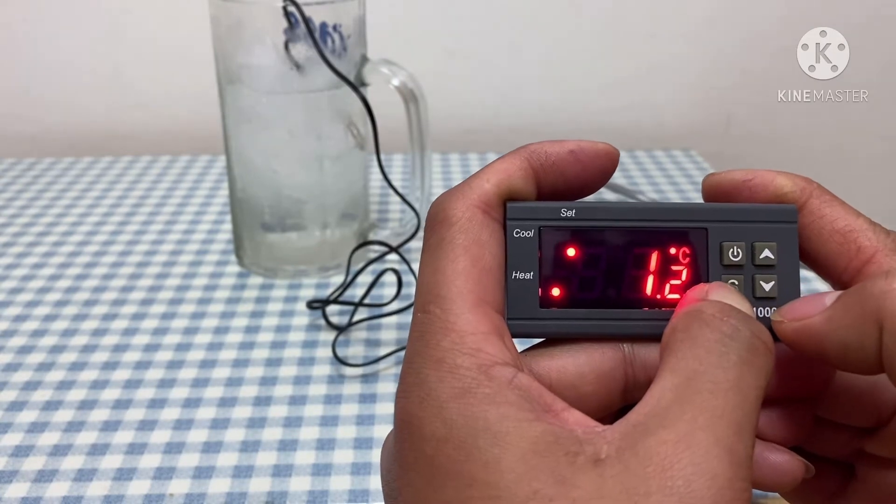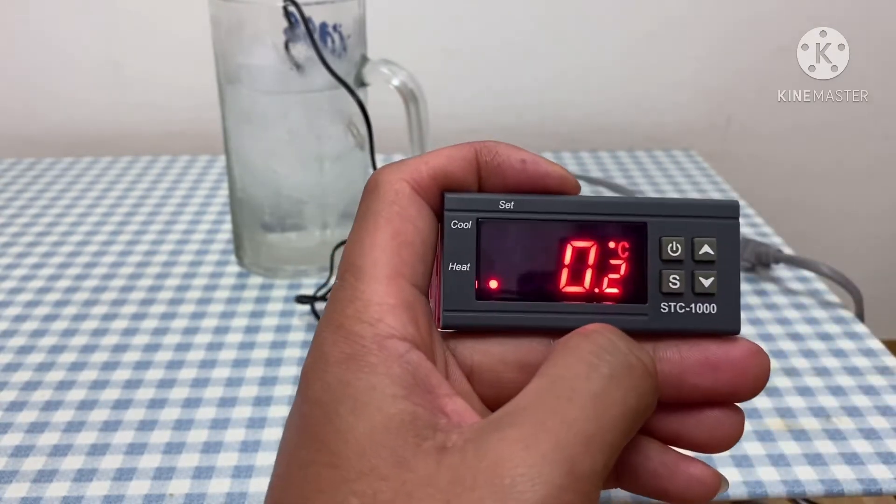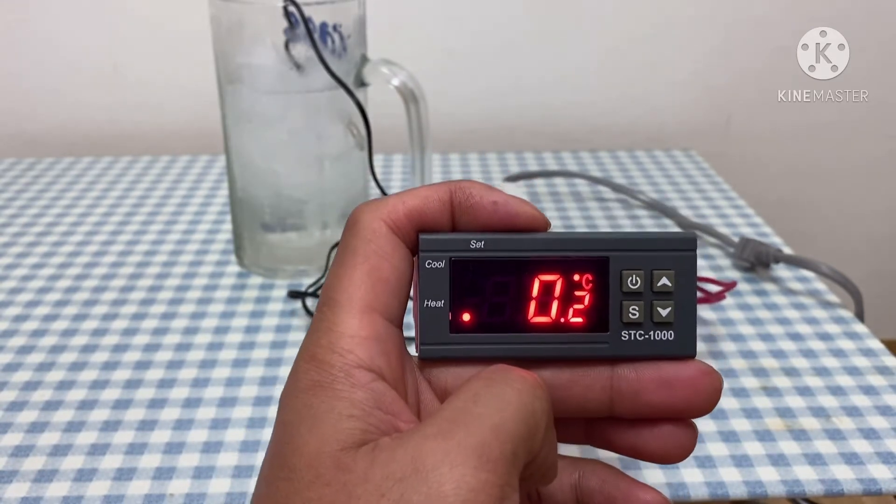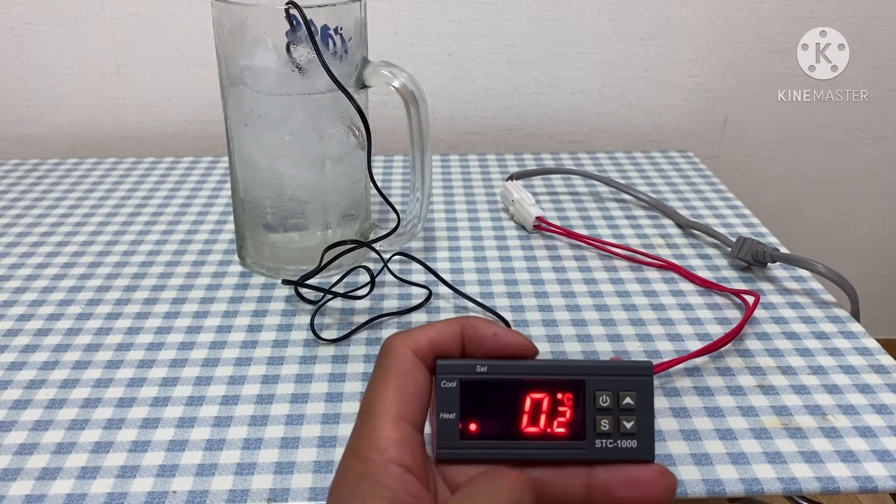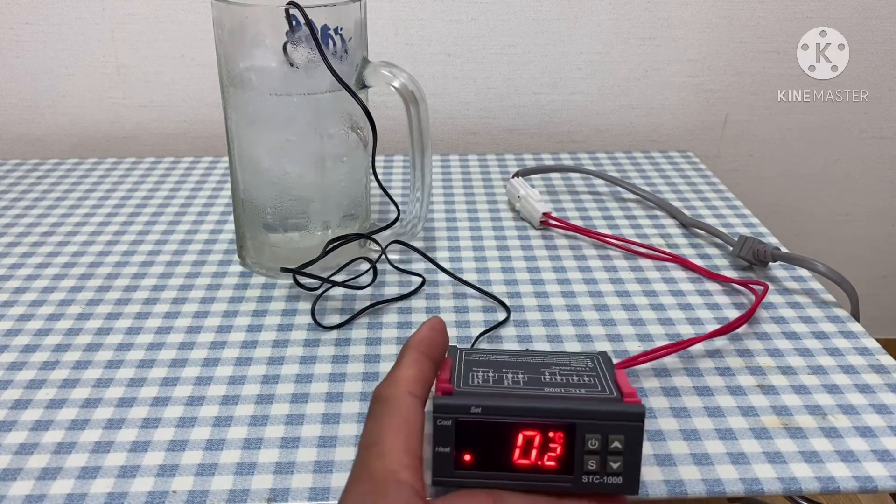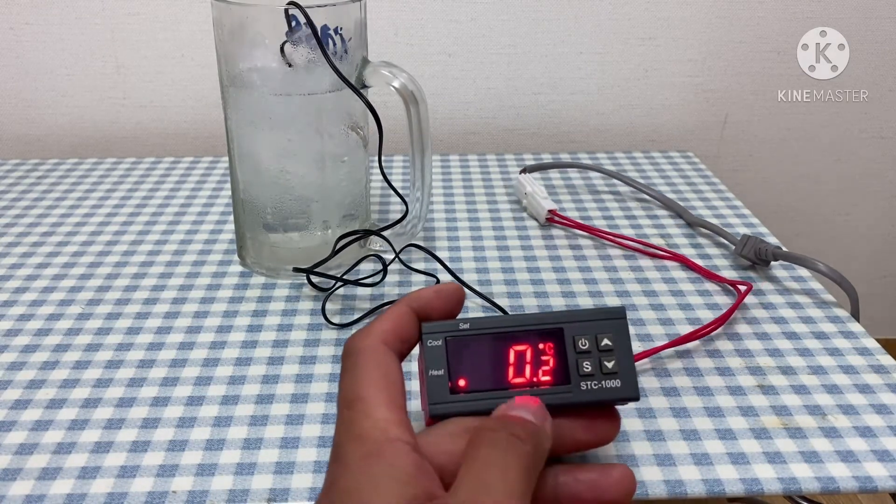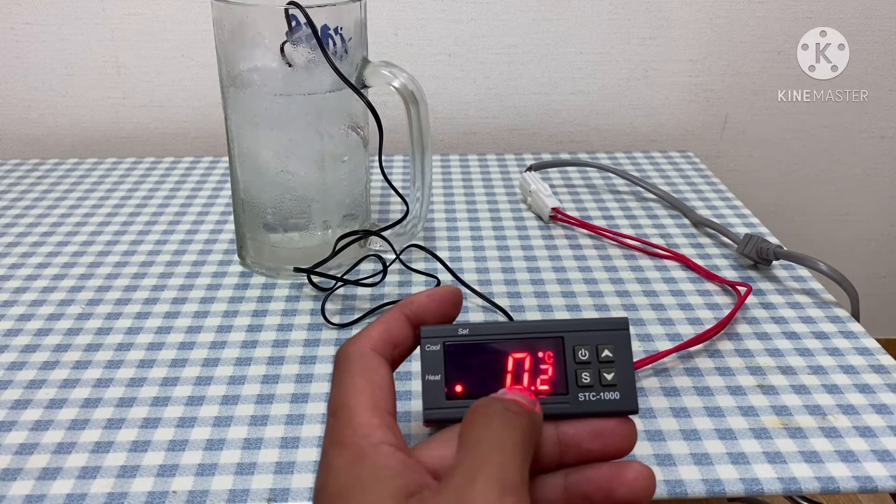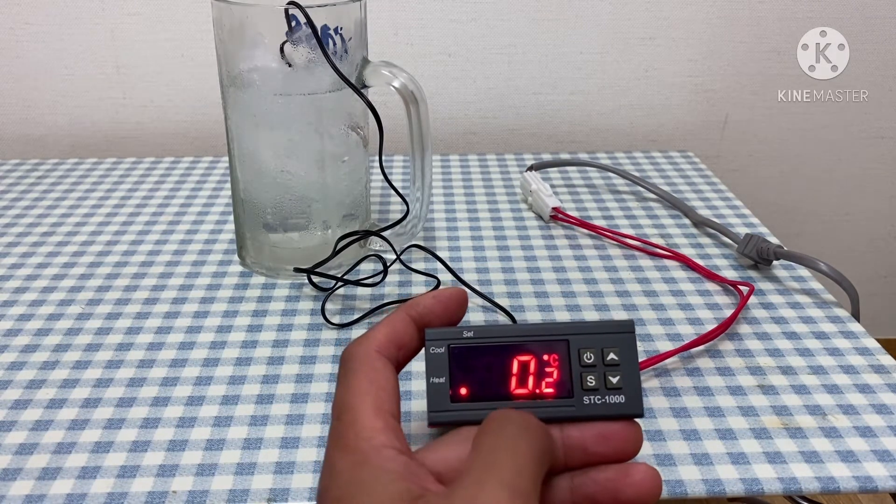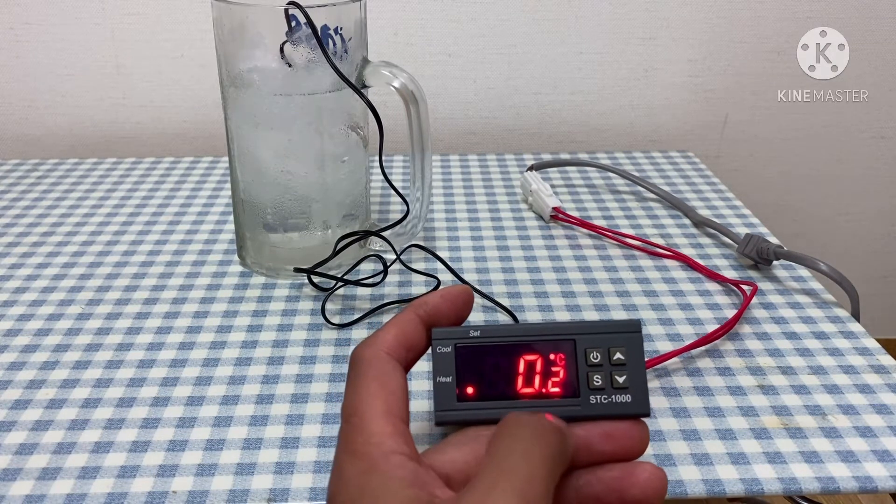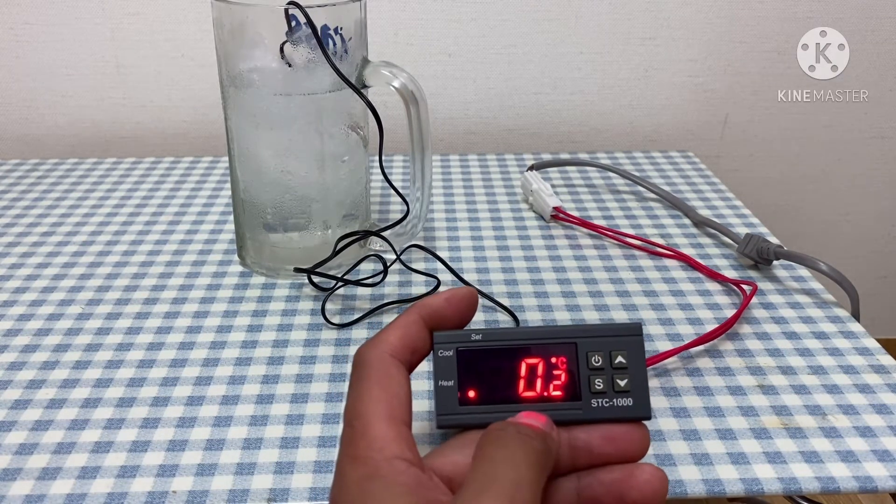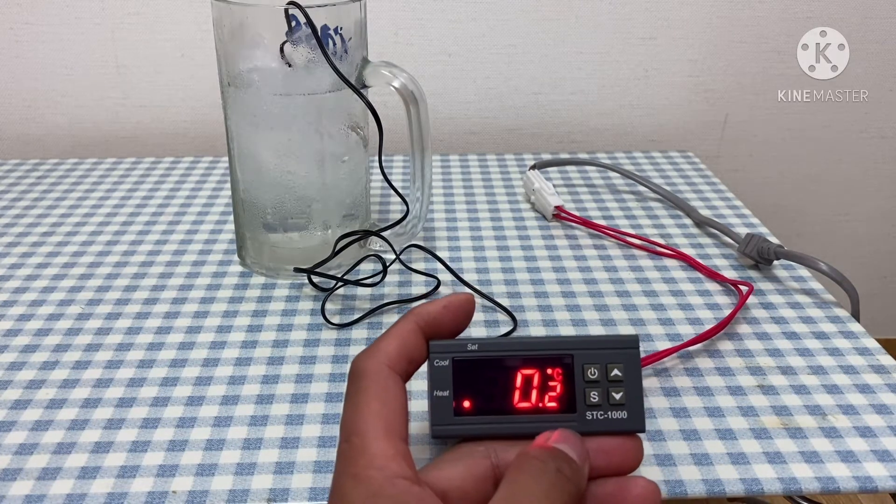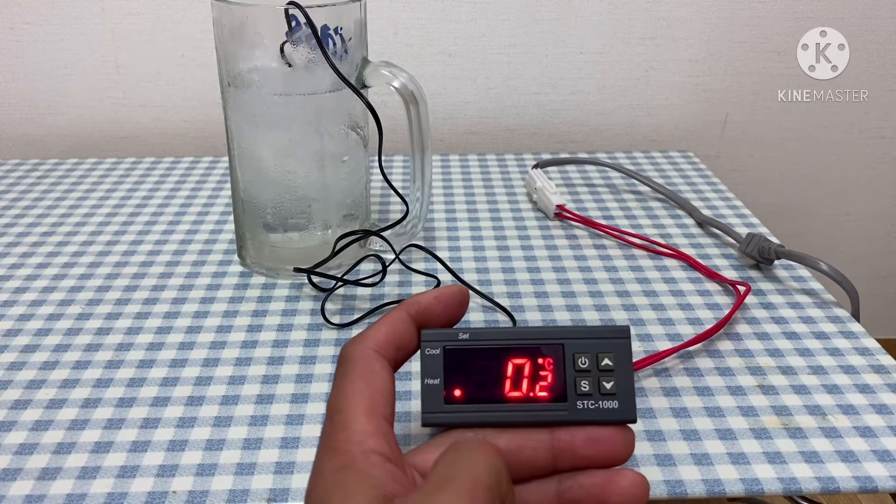Okay, now let's check the actual reading. We already set it to zero degrees, 0.2 degrees Celsius. That's already minimal, it's okay—zero degrees Celsius. So it's already done.